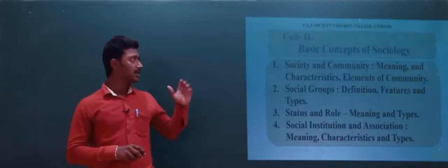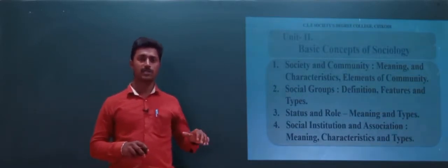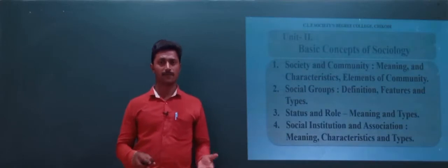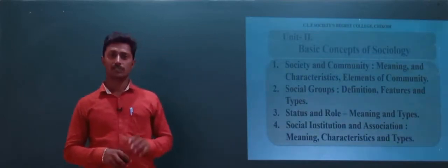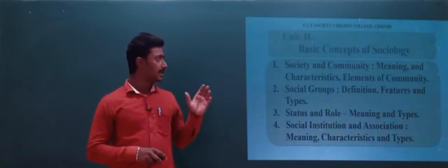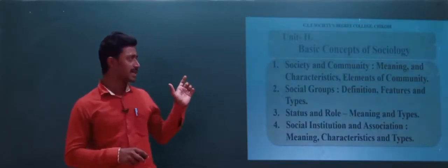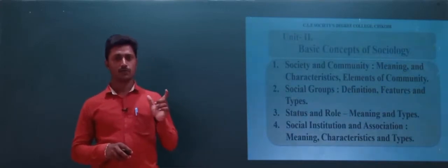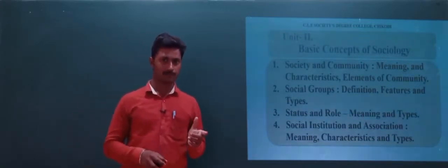In Unit Number Two, we are going to discuss the different basic concepts related to sociology — society and community, social groups, status and role, social institutions, associations, and so on. The unit covers meaning, characteristics, features, and types of each concept.